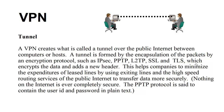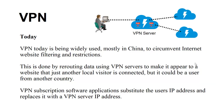Nothing on the internet is ever completely secure. The PPTP protocol is said to contain user IDs and passwords in plain text, which creates an obvious problem. Today, VPNs are widely used — mostly in China — to circumvent internet website filtering, restrictions, and limitations placed on people for accessing information over the internet.